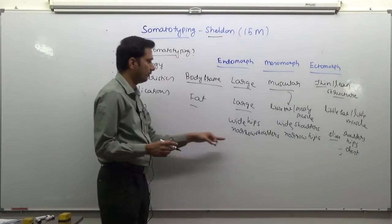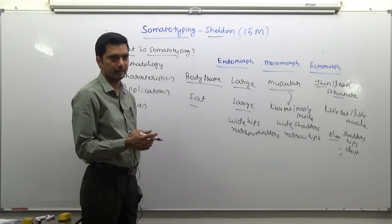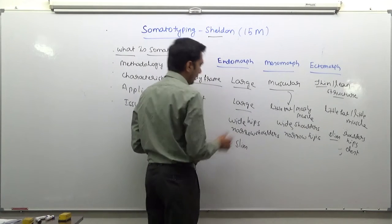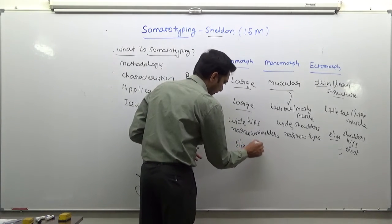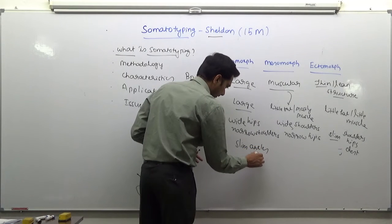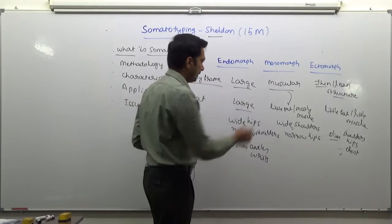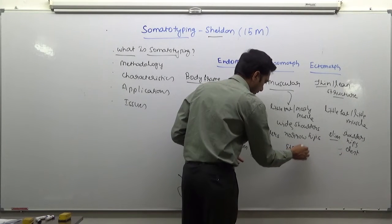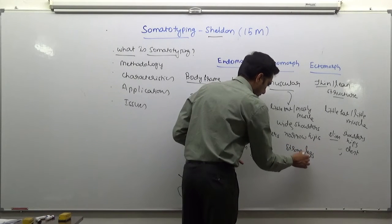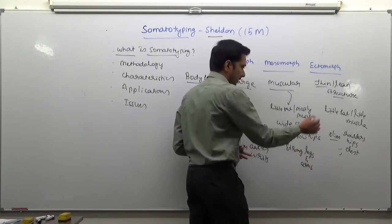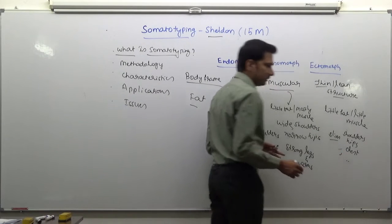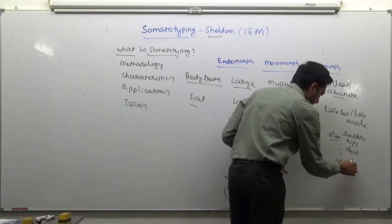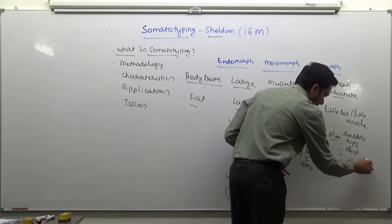Sheldon gave additional characteristics. Endomorphs have slim ankles and wrists. Mesomorphs have strong legs and arms. Ectomorphs, as discussed, have very thin and lean arms and legs.